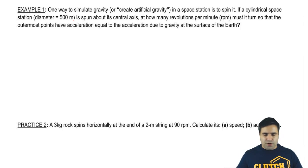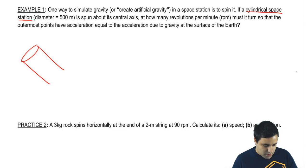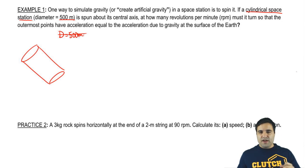It says here, one way to simulate gravity or create artificial gravity in a space station is to spin it. So if you have a space station, you spin it, it simulates gravity. Now it says here, if a cylindrical space station has diameter 500, so diameter equals 500. Now in physics, you're never going to use diameter. So whenever you have diameter, immediately change it for radius. And radius is half of a diameter, so this is 250 meters.